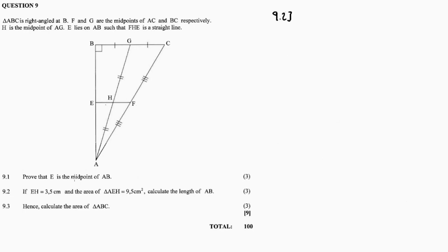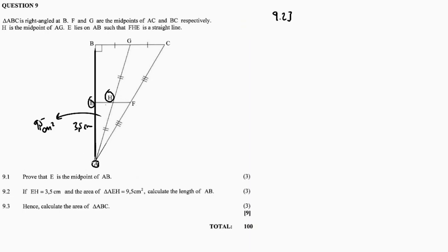Now question 9.2: if EH equals 3.5 centimetres and the area of triangle AEH is 9.5 square centimetres, calculate the length AB.